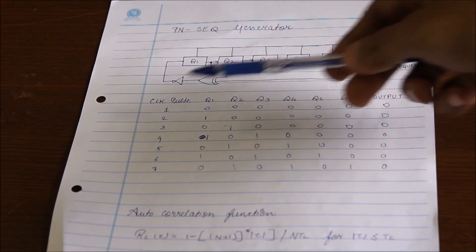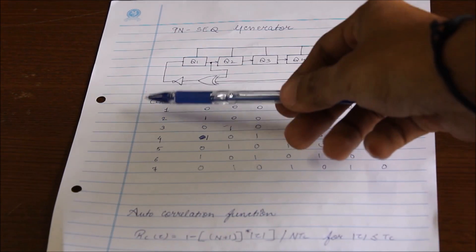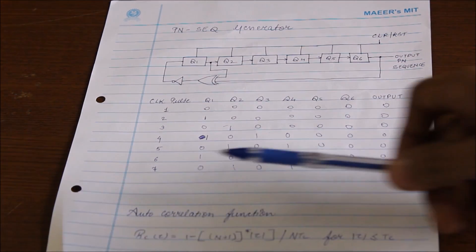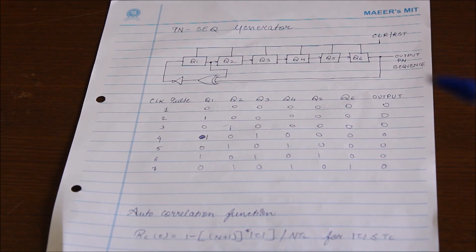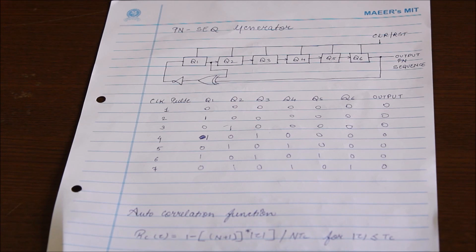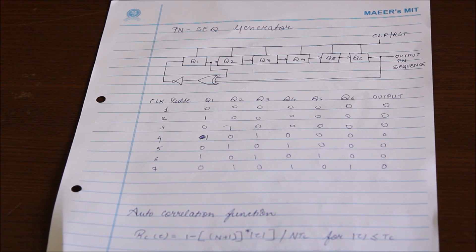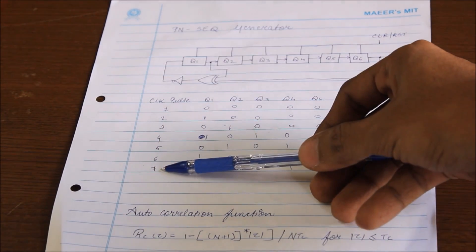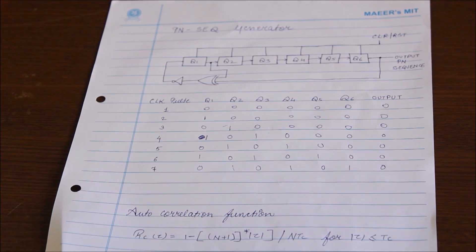Similarly, the remaining series is obtained. This demonstration shows just 7 clock cycles. The length of the PN sequence is decided by the formula N = 2^M − 1, where M is the number of shift registers used. Here, the length would be 2^6 − 1 = 63. We have shown only the first 7 outputs; the remaining are obtained by the same logic.